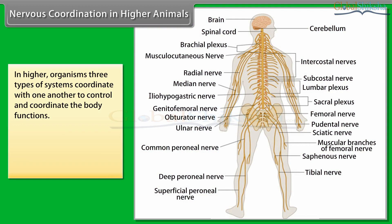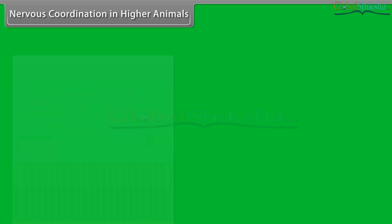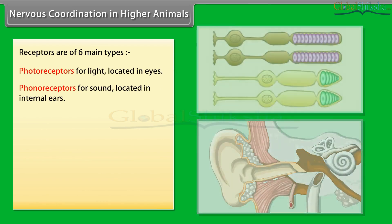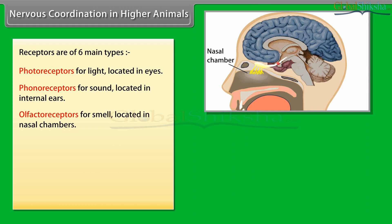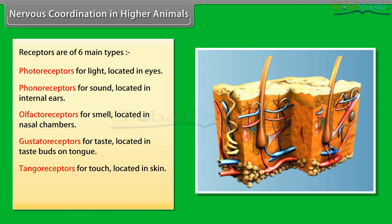In higher organisms, three types of systems coordinate with one another to control body functions: the receptor system, the nervous system, and the effector system. The receptor system is formed of receptors or sense organs made of highly specialised cells which receive stimuli and change them into nerve impulses carried to the CNS. Receptors are of six main types: photoreceptors for light (in eyes), phonoreceptors for sound (in internal ears), olfactory receptors for smell (in nasal chambers), gustatory receptors for taste (in taste buds on tongue), tangoreceptors for touch (in skin), and thermoreceptors for temperature changes (in skin).